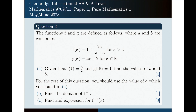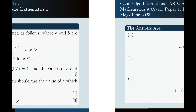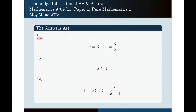If you do your calculations correctly, the answers you will get are as follows. For part a, a equals 3 and b equals 3 halves. For part b, the domain of the inverse function is x greater than 1. And for part c, the rule for f inverse is 3 plus 6 over x minus 1.